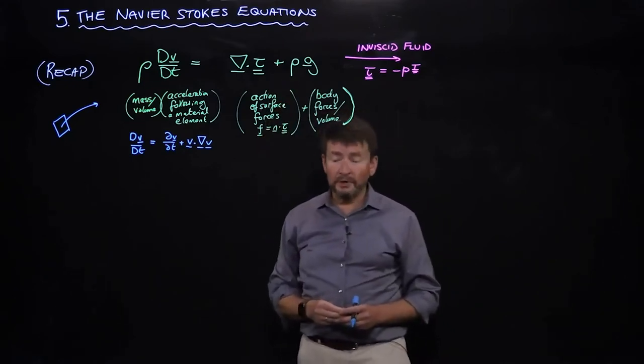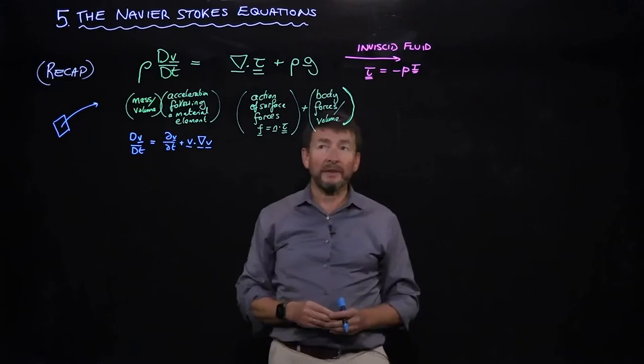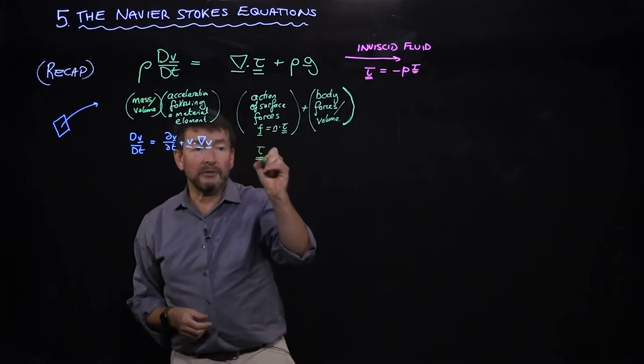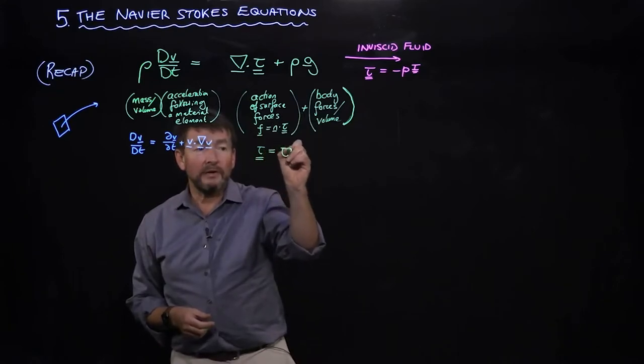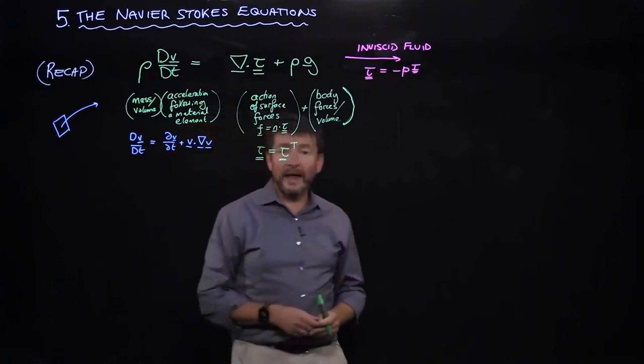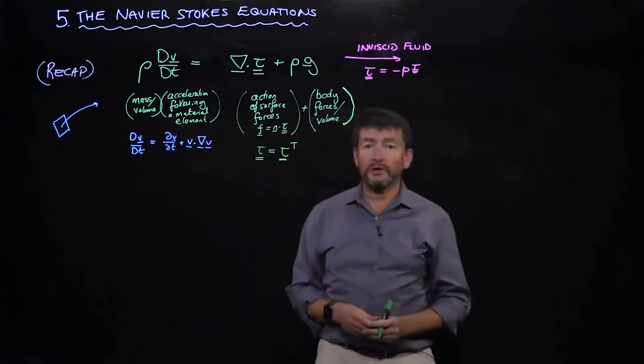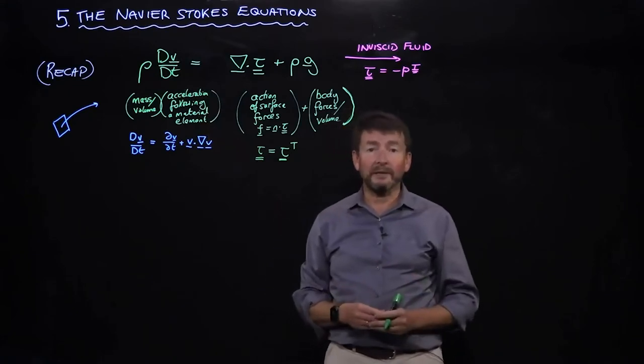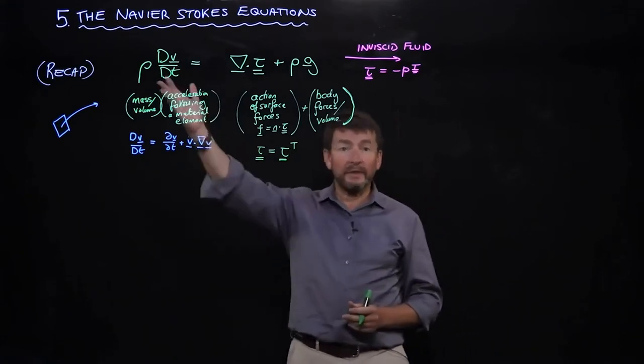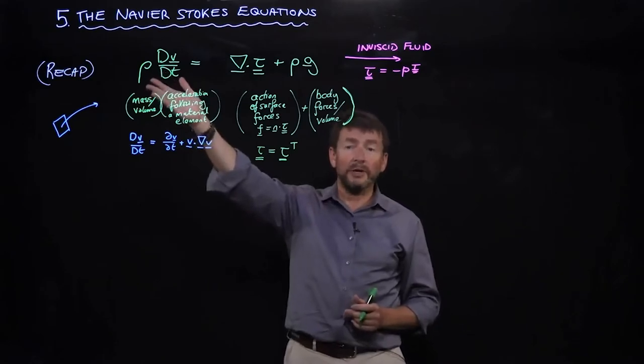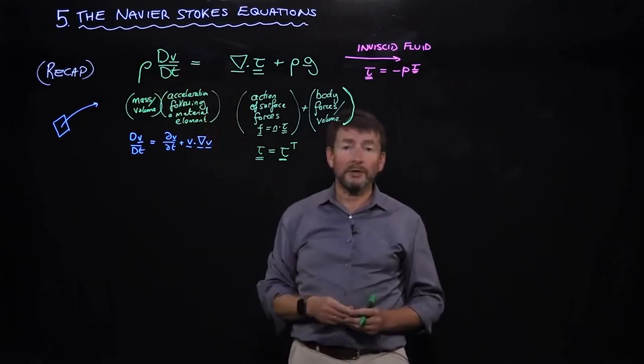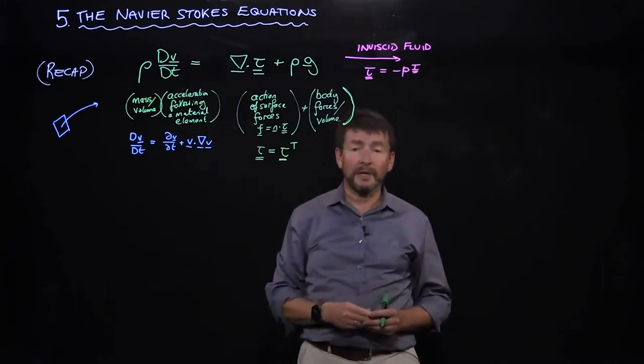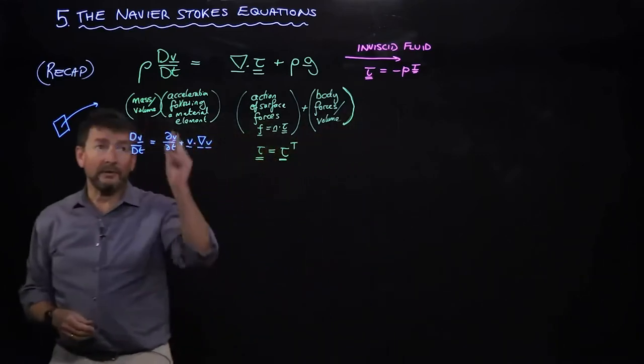The challenge with this equation is that it's not closed. Even though the stress is symmetric, that means it has six unknown components. We have three unknown components of velocity, so we have at least nine components to solve for. Yet this is a nonlinear differential equation that really is only three differential equations for vx, vy, and vz.